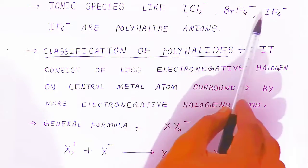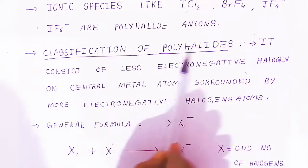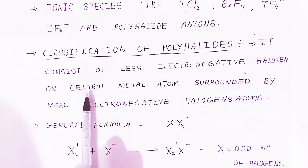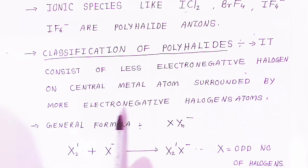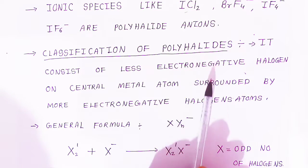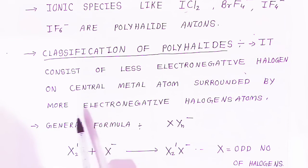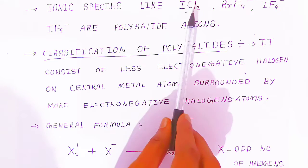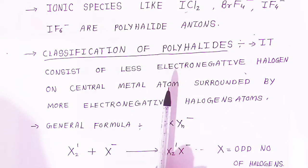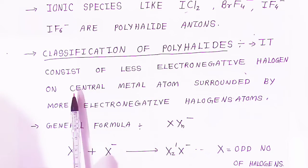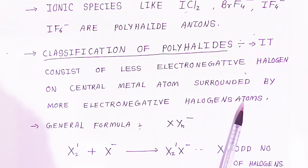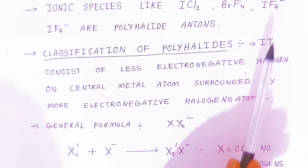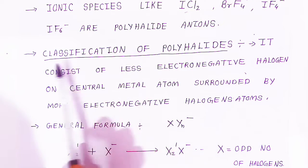All polyhalide anions have a negative charge. In the structure of polyhalides, the less electronegative halogen occupies the central atom position, surrounded by more electronegative halogen atoms. For example, iodine is less electronegative than chlorine, so iodine will be at the center. This is how we classify polyhalides.